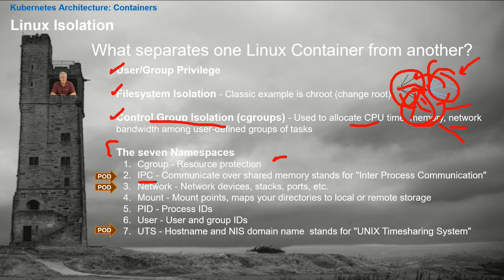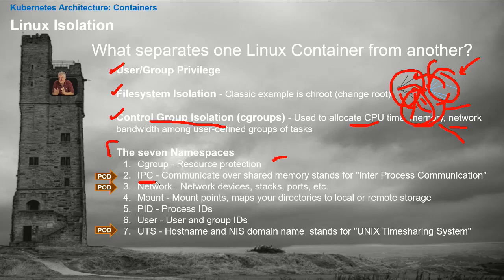The IPC namespace stands for Interprocess Communications. When you're allowed to do it, a process can talk to another process straight through memory — it is blazing fast. That's one of the things you have to give up when you run containers, because you don't want a process in container A to contaminate processes in container B. We're going for isolation here.